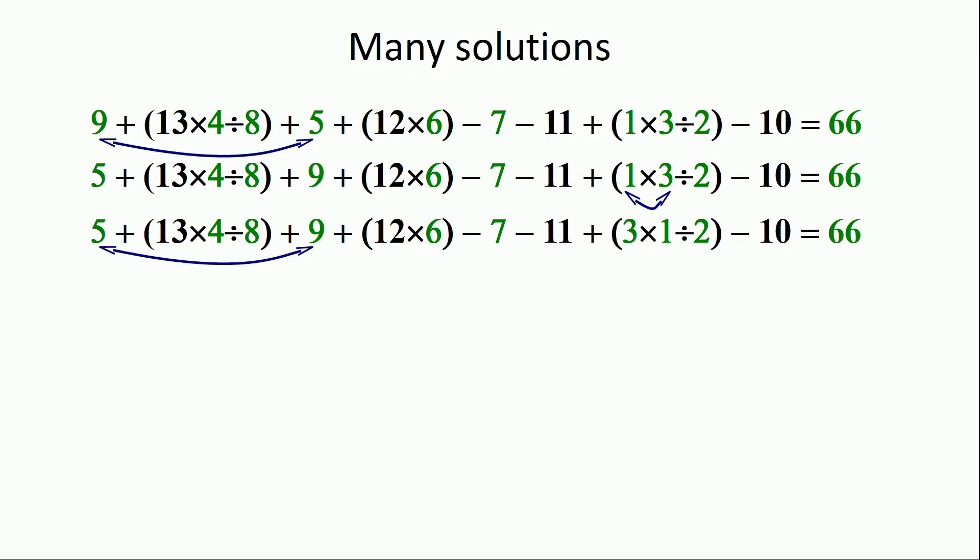Of course, once we do that, we can switch the two numbers which are being added. So anytime you come up with an answer, you can actually generate a total of four answers by placing the numbers in different positions because certain operations are commutative. That is, it doesn't matter which way you evaluate them. Addition and multiplication are commutative.